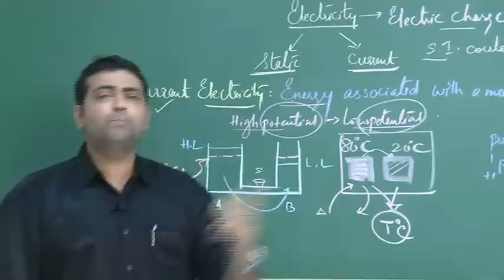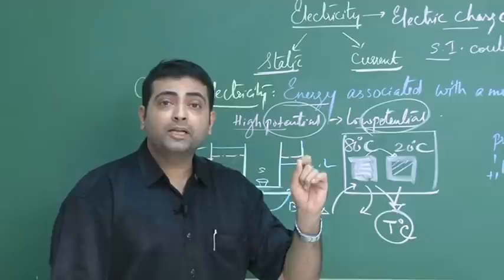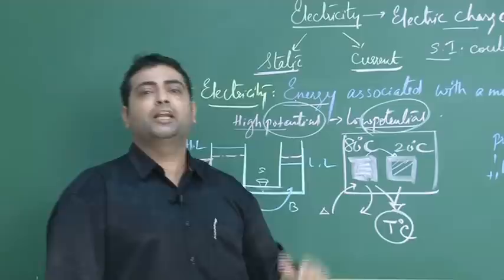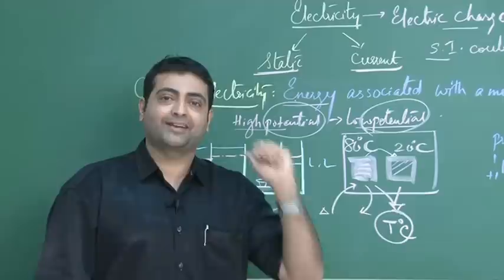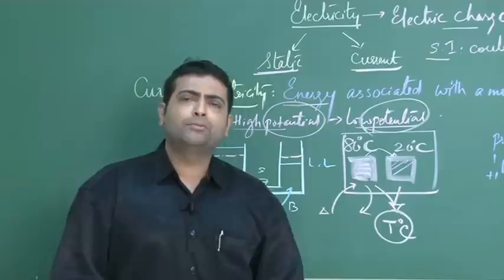So if I want to understand motion of charge, there is some energy associated, and for this energy to move, there should be a difference in electric potential. Who provides this electric potential difference? Over here, it's the difference in water level; over there, it's a difference in temperature. Likewise, what is the source for electric potential difference? A cell or a battery.